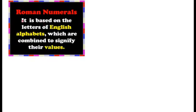They used only seven basic symbols for writing numerals. These are the seven basic symbols: I equals 1, V equals 5, X equals 10, L equals 50, C equals 100, D equals 500, and M equals 1000.